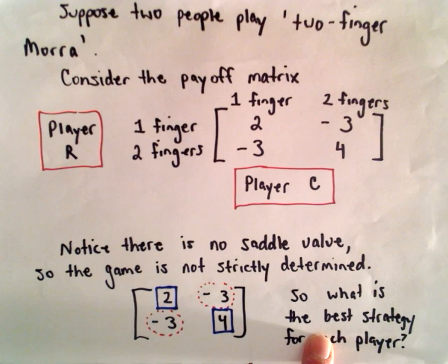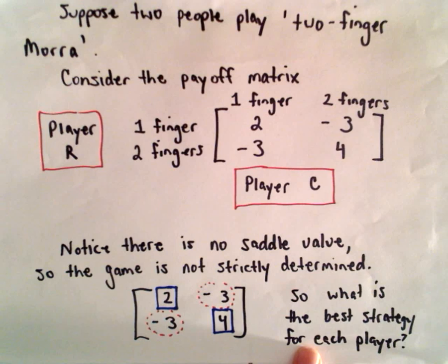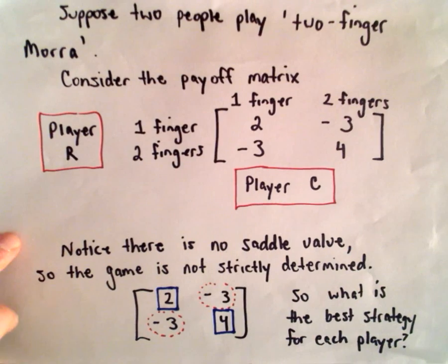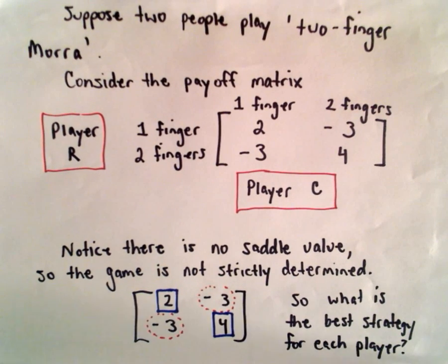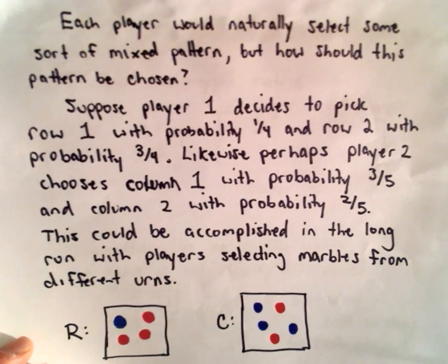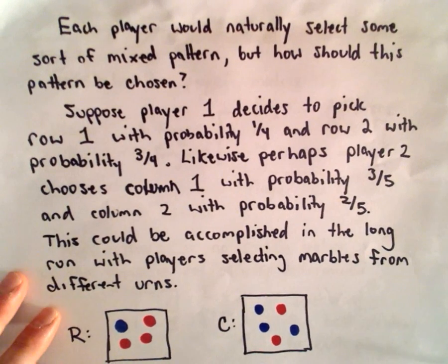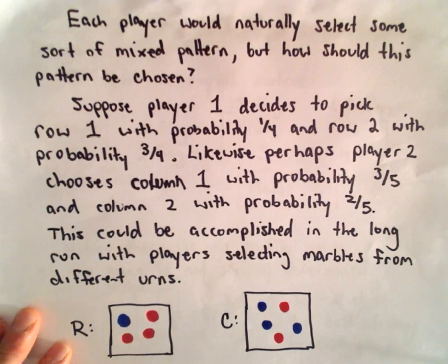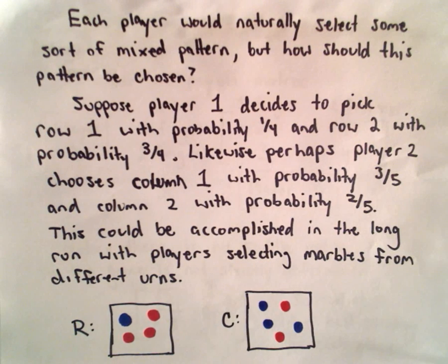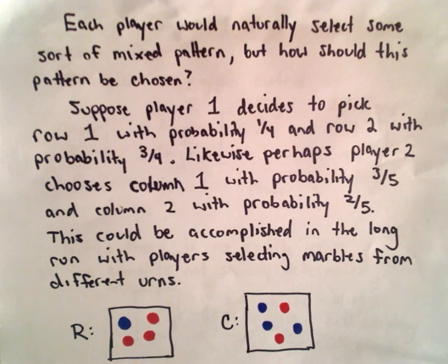So obviously the big question here, what is the best strategy for each player? Is there a best strategy for each player? Maybe that's what we should ask ourselves first. And the cool answer is there does turn out to be some optimal strategy. So first off, let's talk about some other things here. And we're going to need some sort of random process. And this is how we can introduce some sort of random process.